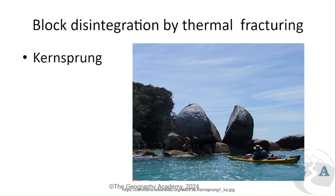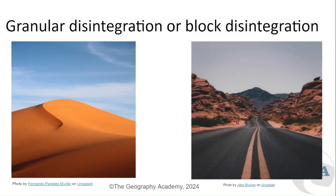This can happen as block disintegration due to thermal fracturing — we see a quite large rock split in the middle — and then there is granular disintegration. In the desert we can see rocks broken down that will eventually collapse under that heat and the change between daytime and nighttime temperatures. When they fall down, they continue to break down until they reach granular level, like the sand dune shown here.